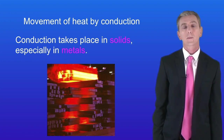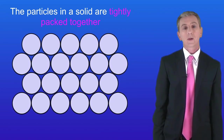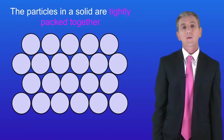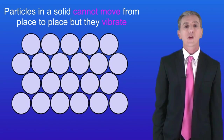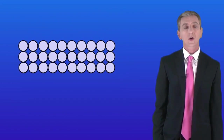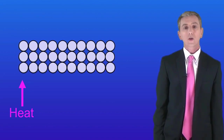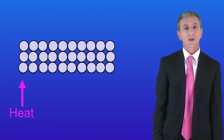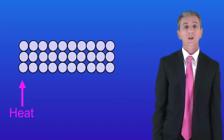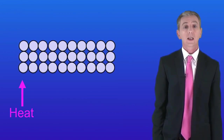In a previous video we looked at how the particles are arranged in solids. The particles in a solid are tightly packed together — in fact the particles are all touching each other and there are no spaces between them. The particles in a solid cannot move but they can vibrate. When we heat one end, the heat gives energy to the particles so they vibrate harder. Because all the particles are touching, the vibrations now pass across to the particles next to them. So the heat energy is making its way along the solid as the vibrations spread from one particle to the next.